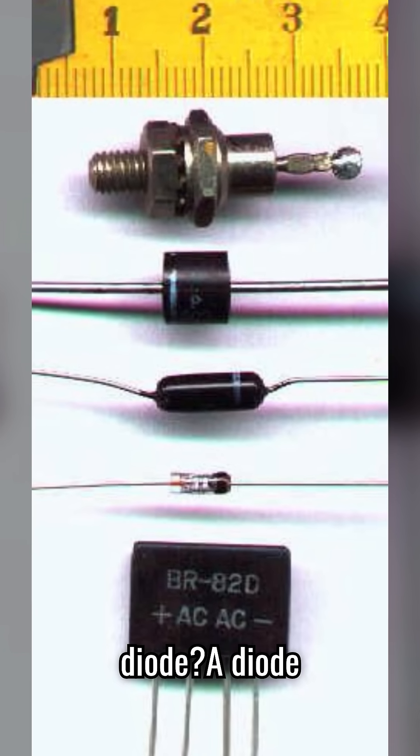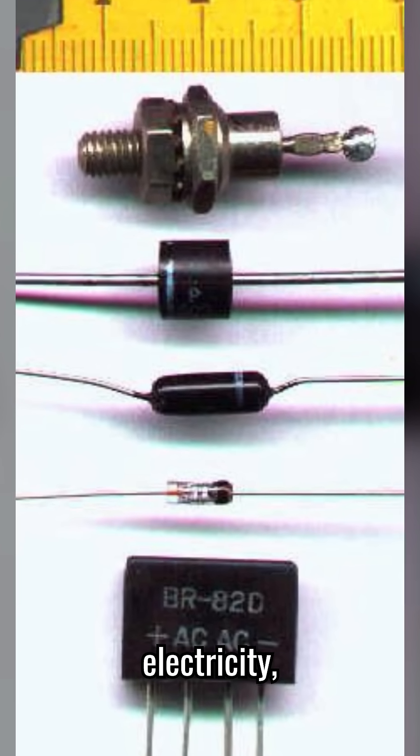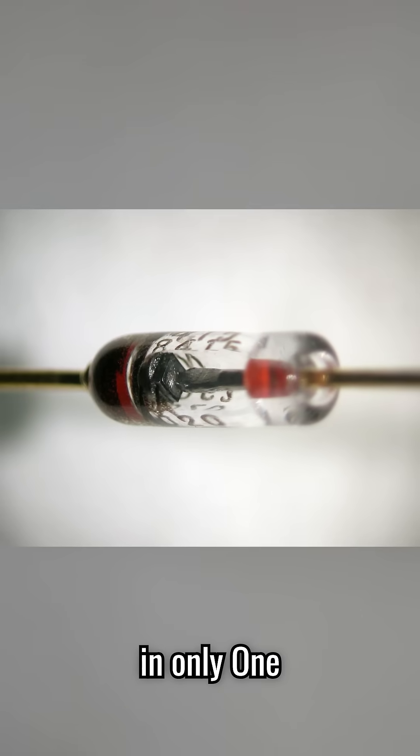What is a diode? A diode is the gatekeeper of electricity, letting current flow in only one direction.